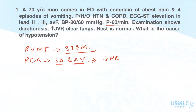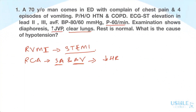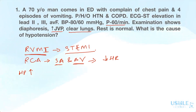The examination shows increased JVP and clear lungs. Clear lungs indicate that the patient's left ventricle is normal. The increase in jugular venous pressure is due to increased hydrostatic pressure caused by the right ventricular MI, which leads to elevated JVP.